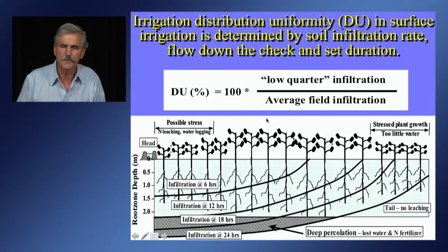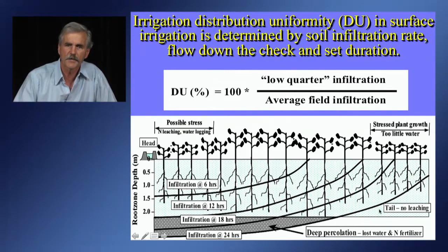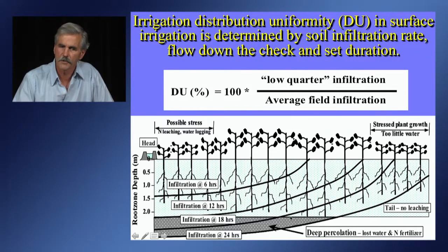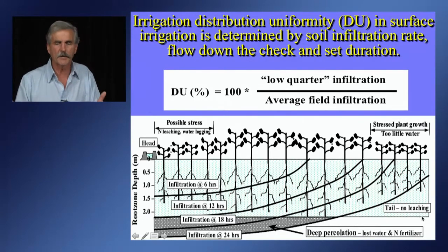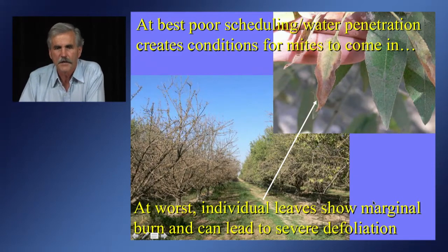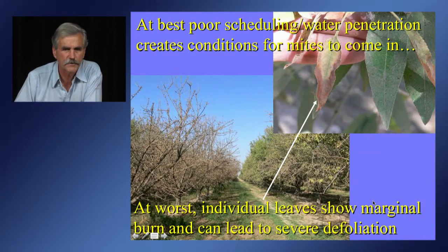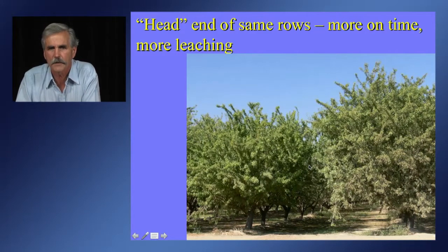In a flood system, distribution uniformity is simply 100 percent times the low-quarter average infiltration divided by the average infiltration for the entire block. This particular drawing shows about 70 percent DU. Here's what it looks like in a flood almond field — at the tail end, insufficient penetration over several years accumulated salts, defoliated the Monterey, and mites came in on both the Monterey and Nonpareil trees. The head end had absolutely no problem — no defoliation, because it had sufficient recharge of water.